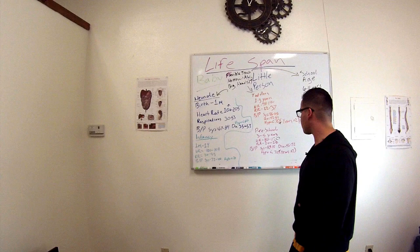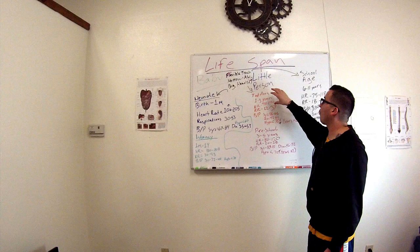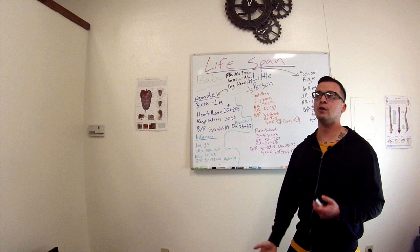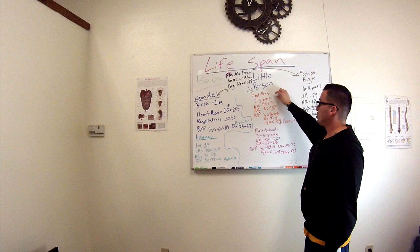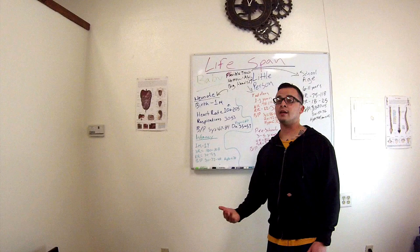The hypotension formula — 70 plus (age × 2) — applies to the little person group only: toddlers, preschoolers, and school-age kids. For the baby category — neonates and infants — you don't use that equation. It's only for those three subcategories. If the systolic is below that calculated number, your patient has hypotension.